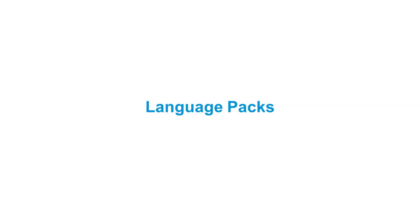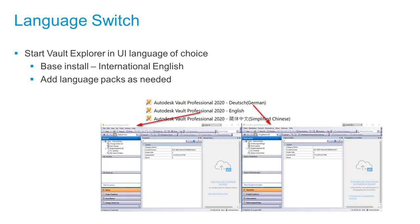The second agenda item is language packs for Vault — arguably the most wanted feature. Other Autodesk products have had this for a while and Vault is now aligned. You can now start Vault Explorer in a user interface language of your choice. You need to install the Base International Language pack and can then add additional language packs as needed.